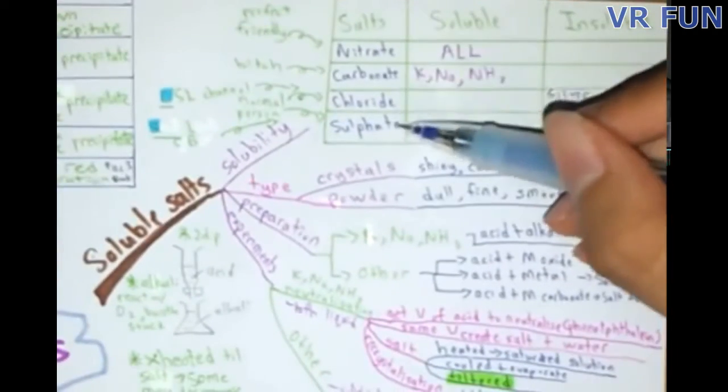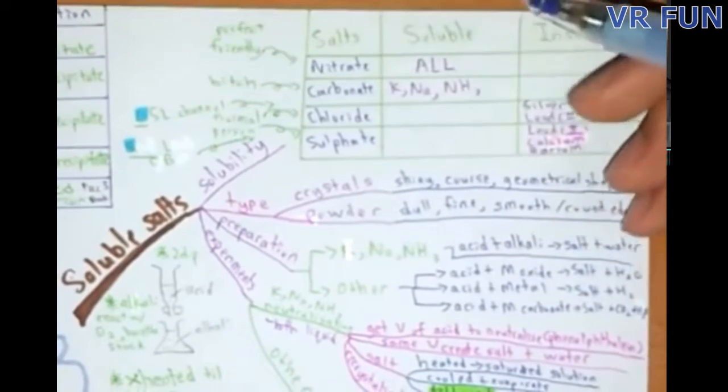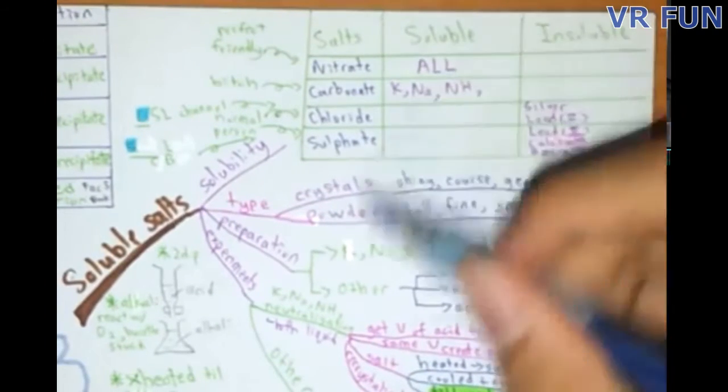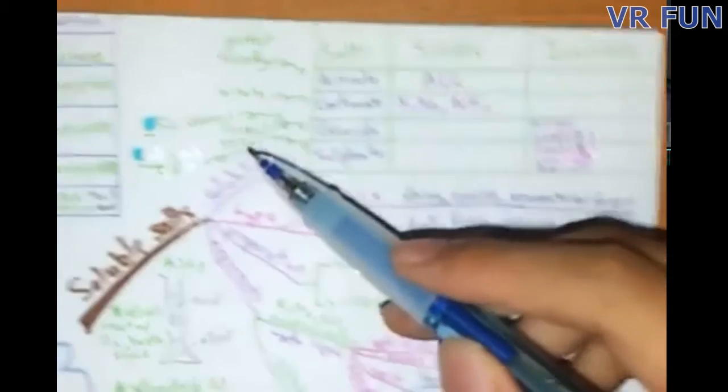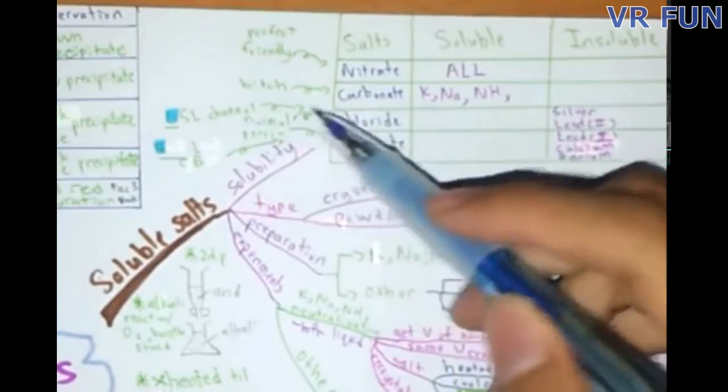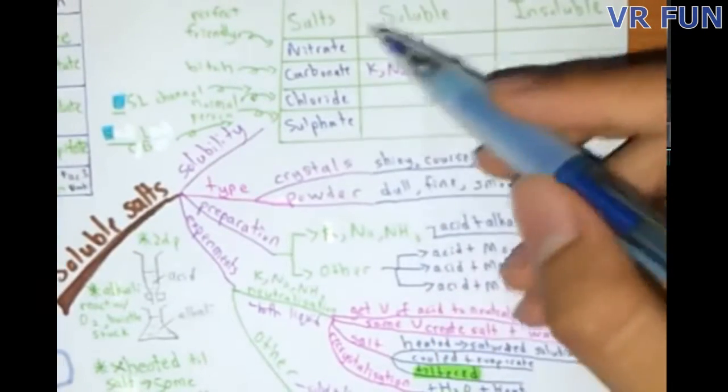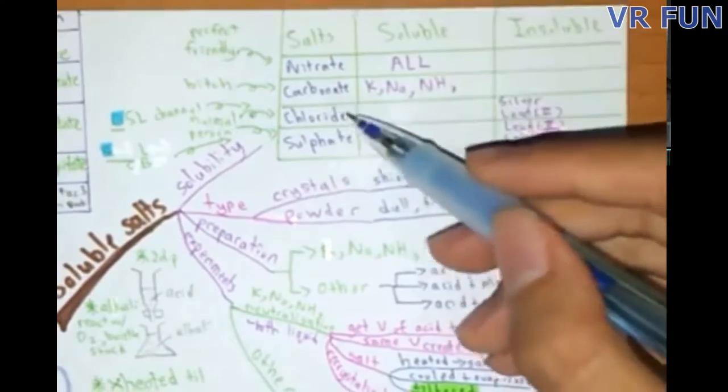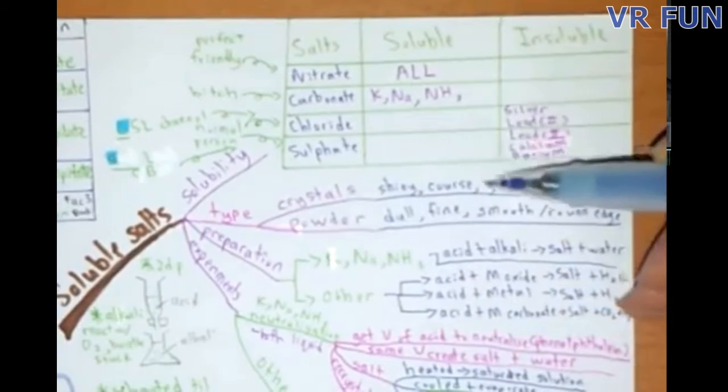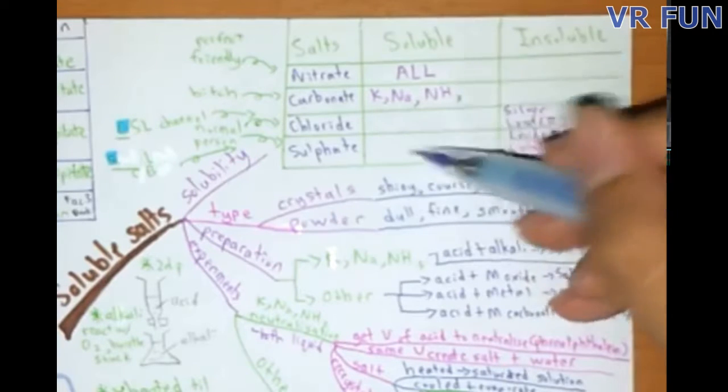Moving on to chloride and sulphate. By the way, for SPM you just need to remember this to answer all of the questions. In chloride, you need to remember CSL channel. CSL basically means that chloride and sulphate are normal people. Nitrate is extraordinarily friendly that can be soluble with anyone. Chloride and sulphate are normal people where they have a few friends that they are insoluble with, other than that they are fine with.